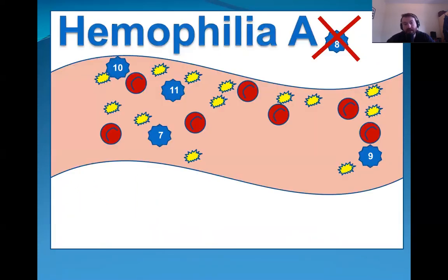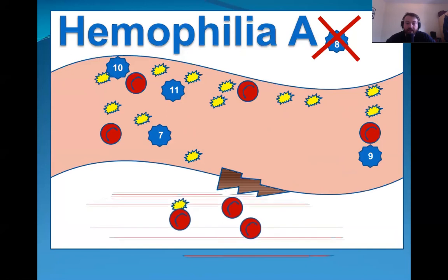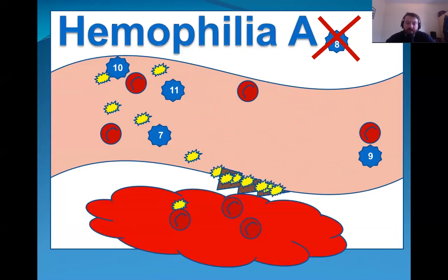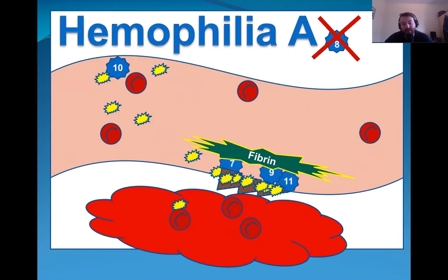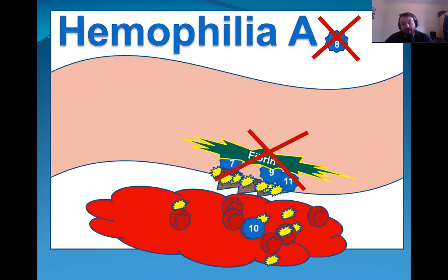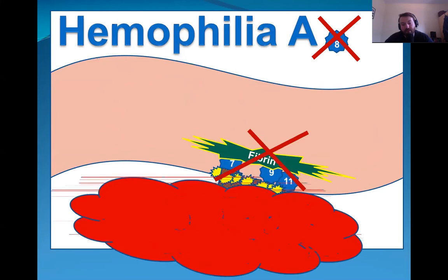What happens when a hemophilia A patient has an injury? When the injury occurs, the bleeding starts. The platelets migrate to the injury to initiate primary coagulation, which is a very weak coagulation. The factors start migrating — factor 7, factor 11, factor 9. However, factor 10 does not migrate to the injury because of the absence of factor 8, which is required to activate factor 10. Therefore, there is no fibrin produced and the bleeding keeps growing.